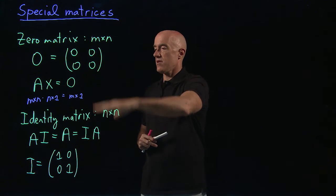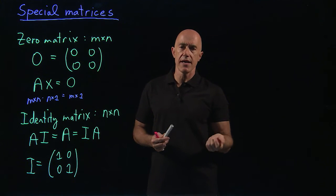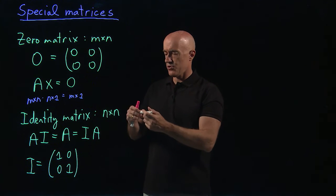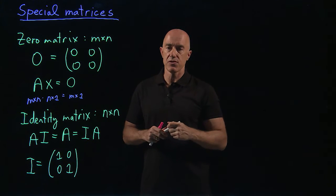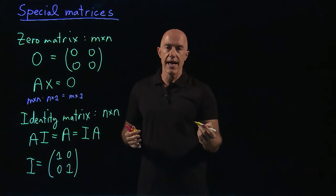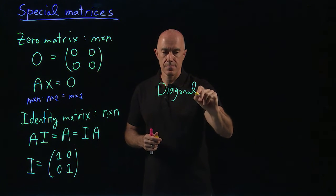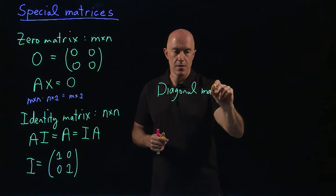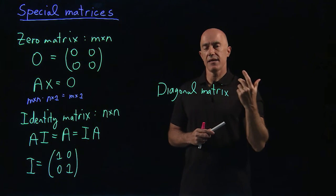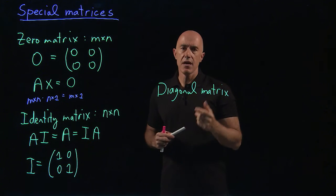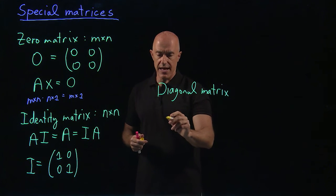So these are the most special matrices. There are also names for matrices that arise in matrix algebra that you should be familiar with. One of them is called a diagonal matrix. So let's write down what a diagonal matrix looks like.